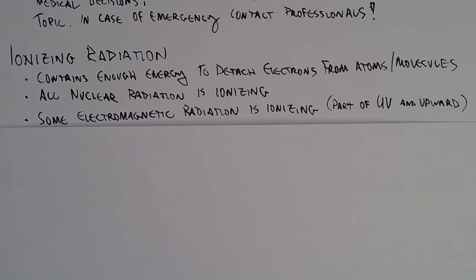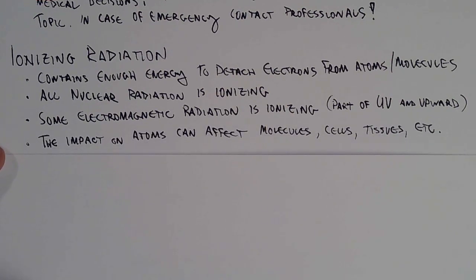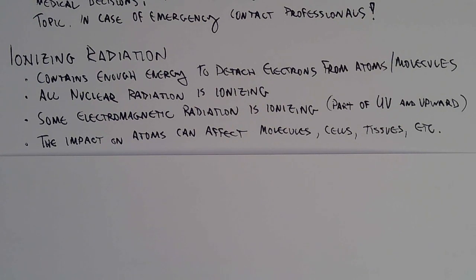Remember, not all radiation is ionizing. For example, a radio wave is technically electromagnetic radiation but it's not ionizing, nor is a microwave. Ionizing radiation specifically impacts atoms — it removes electrons from atoms. Although an ionized atom can affect a molecule, and molecules can affect cells, which can affect tissues. So this effect can cascade up through biological systems, but ultimately ionizing radiation targets atoms.